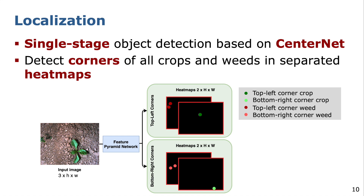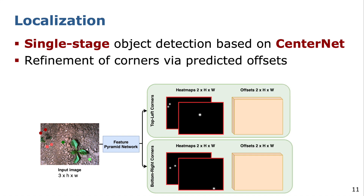In order to compute bounding boxes from those corner points, we project each top-left and bottom-right corner with a high confidence score back to the input image. However, the location of the predicted corners are rather coarse since the spatial resolution of the heat maps is smaller than the input image, which would lead to non-tight bounding boxes. Therefore, we predict additional offsets in x and y direction and pick the predicted offset at the predicted corner location to refine its location.